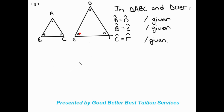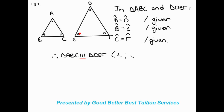For the final step, which is similar to congruency, we say: therefore triangle ABC is similar to triangle DEF. Remember the sign for similarity is these three vertical parallel lines. Our reason here is angle-angle-angle. That's the first condition for similarity — three angles are the same in both triangles.